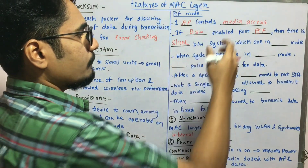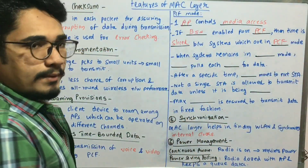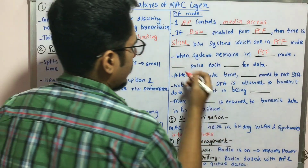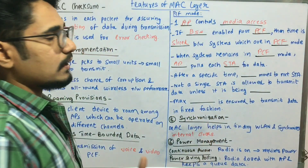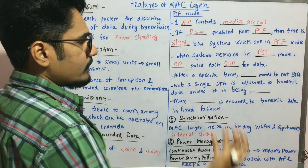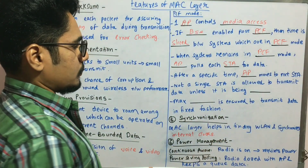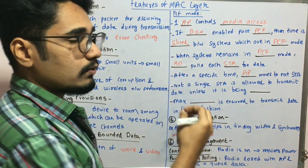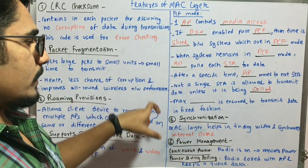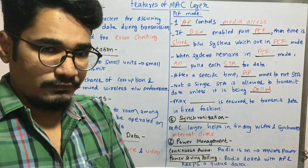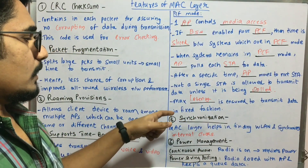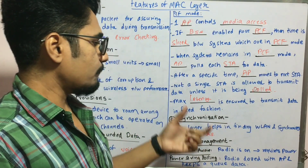When the system remains in PCF mode, the access points allowed to roam in that area poll each station for data — asking whether each station wants to do a data transfer. After a specific time the access point moves to the next station. Not a single station is allowed to transmit data unless it is being polled, so the polling functionality is key here. In order to ensure maximum data is transmitted in a fixed fashion, a certain amount of maximum latency is ensured.